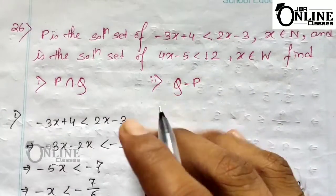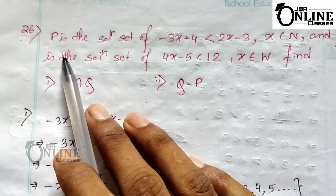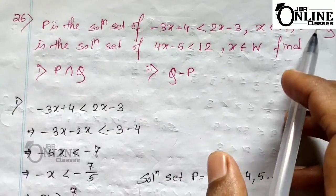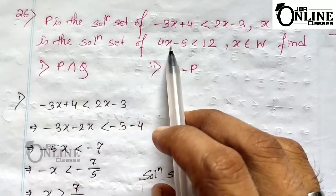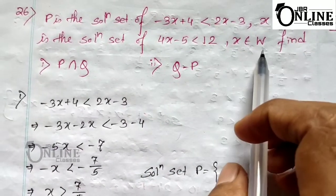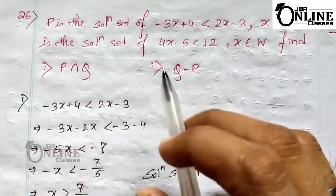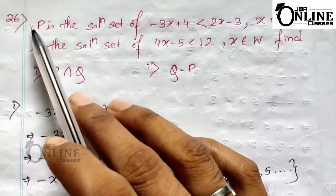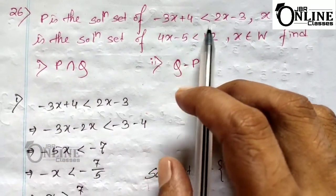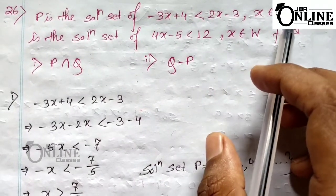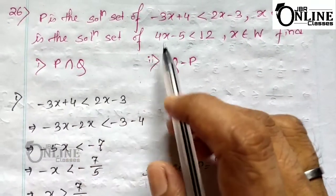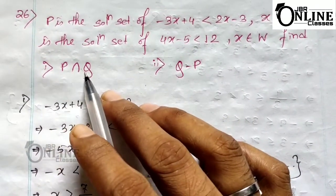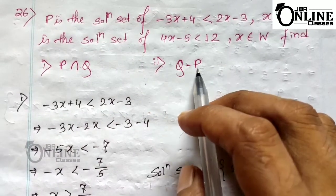Sum number 26: P is the solution set of −3x + 4 < 2x − 3 where x ∈ N, and Q is the solution set of 4x − 5 < 12 where x ∈ W. Find P intersection Q and Q minus P.